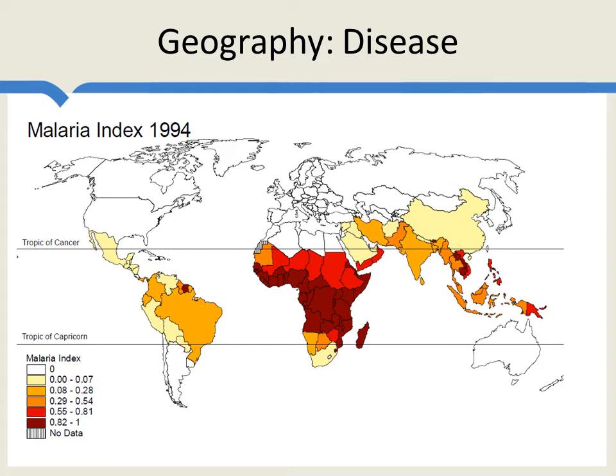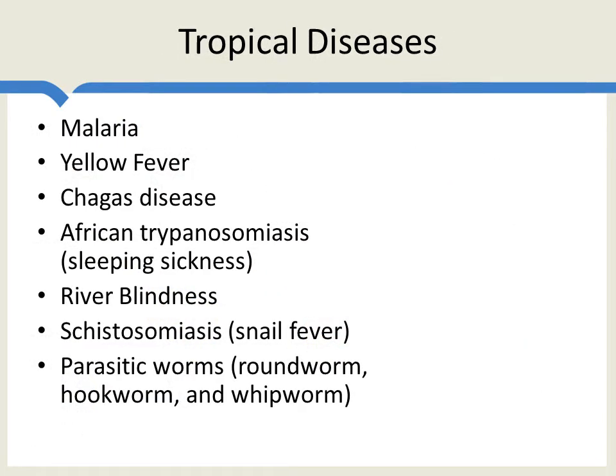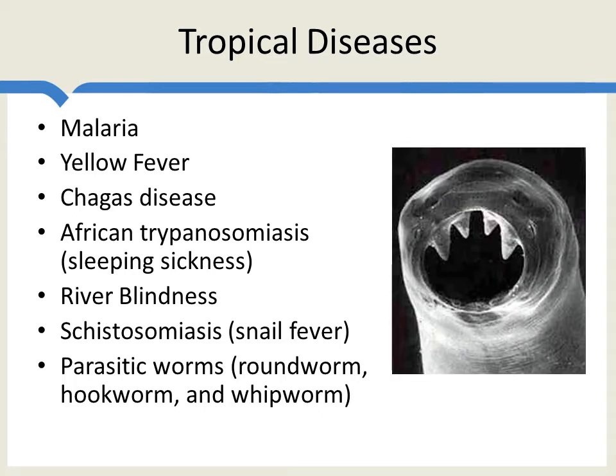And it's not just malaria. Here's a list of diseases more common in the tropics: malaria, yellow fever, Chagas disease, sleeping sickness, river blindness, snail fever, and parasitic worms like roundworm, hookworm, and whipworm. Over a quarter of the world's population is infected with at least one of these worms — about 1.4 billion have roundworm, about a billion have hookworm, and another billion or so have whipworm. These worms infect the intestinal system, drain people's energy, reduce their ability to get nutrients, stunt growth, reduce IQ, and make it easier to get other diseases. Pretty horrible diseases — that's a picture of roundworm.